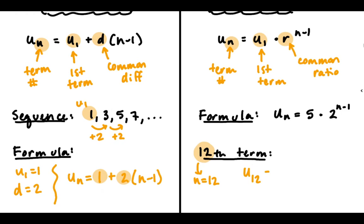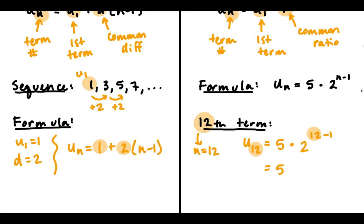To find that term, u_12, I'm going to substitute 12 for n in our formula. So u_12 equals 5 times 2 to the 12 minus 1. Here's where I changed n to 12 in the formula. Then we simplify. That equals 5 times 2 to the 11th.